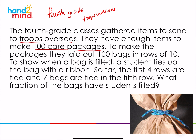When they make the packages, they're going to make them in rows of ten — so there's going to be ten rows. Rows of ten means ten rows of ten bags, because there's a hundred bags total. To show when a bag is filled, the student ties it. The first four rows of those ten rows have already been filled, and then the fifth row only has seven bags filled — it doesn't quite have the ten bags each row holds, just seven of them.